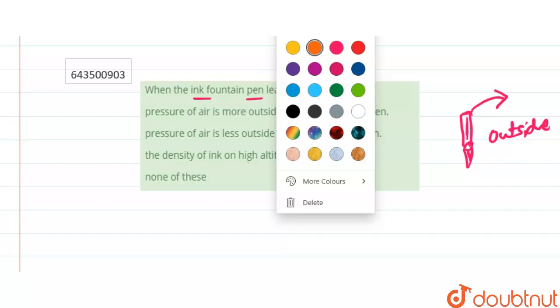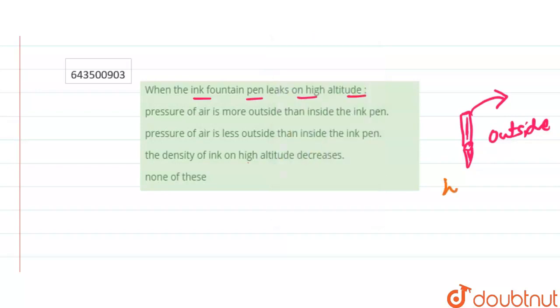And you know this thing that what happens when we go on higher altitudes. So on higher altitudes, the pressure decreases because the density of air actually decreases, and because the density of air reduces, that's why the pressure also reduces.